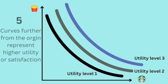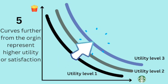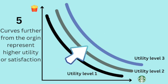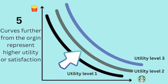Fifth, the further out the curve is from the origin of the graph, the higher level of utility or satisfaction. That's because the further away you are, the more goods you have, or in our case, more visits to Starbucks or McDonald's. More goods to consumers mean greater pleasure or utility.